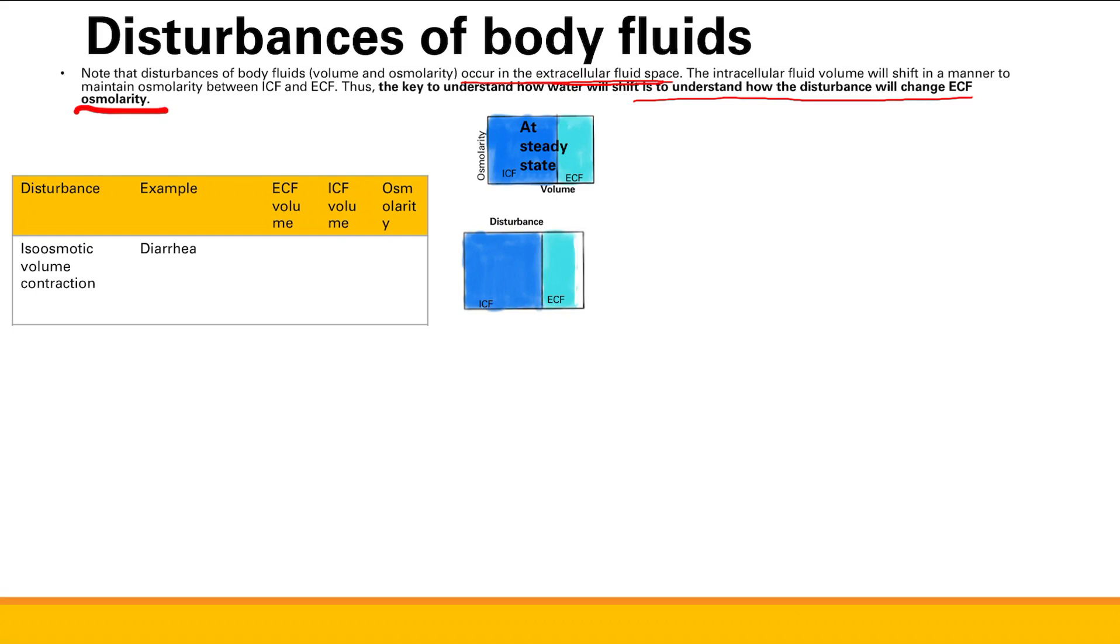The first disturbance is an iso-osmotic volume contraction, for example, something like diarrhea, where you're losing both fluid and different molecules at pretty much the same rate so that the concentration of your extracellular fluid stays the same. We're going to use these graphs to illustrate this. Volume is on the x-axis. If you see increased volume, this will show you increased ECF volume. And then osmolarity is the height. In this case, we have an iso-osmotic volume contraction. Osmolarity is the same, so height is the same. But we went left because we lost volume.